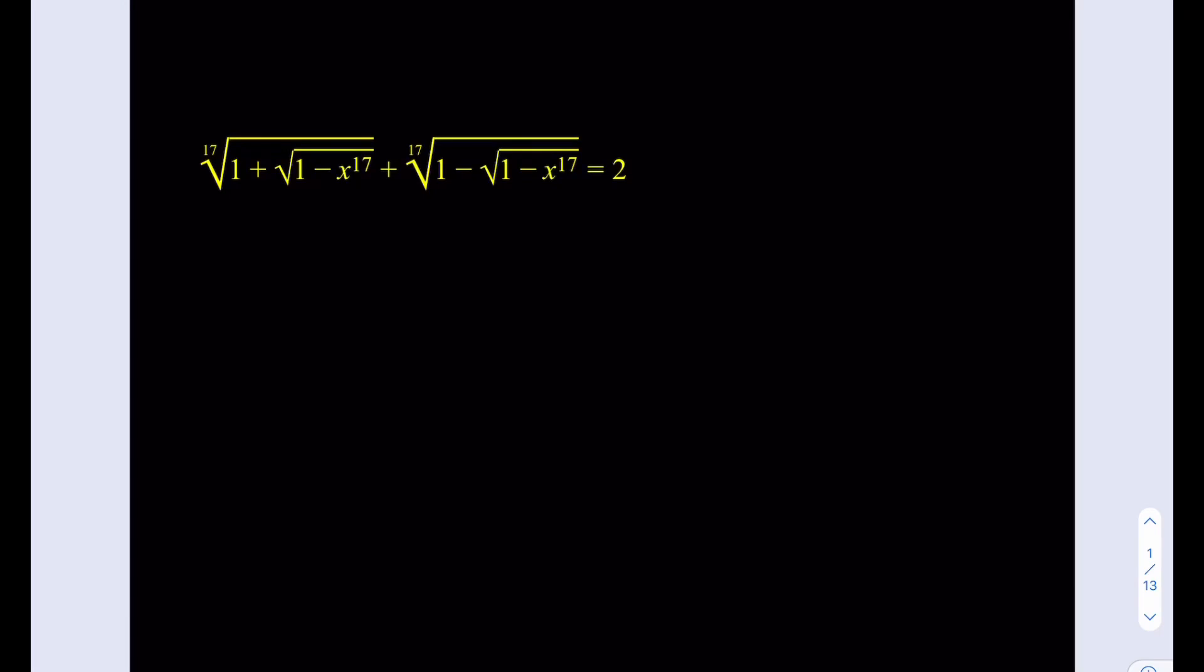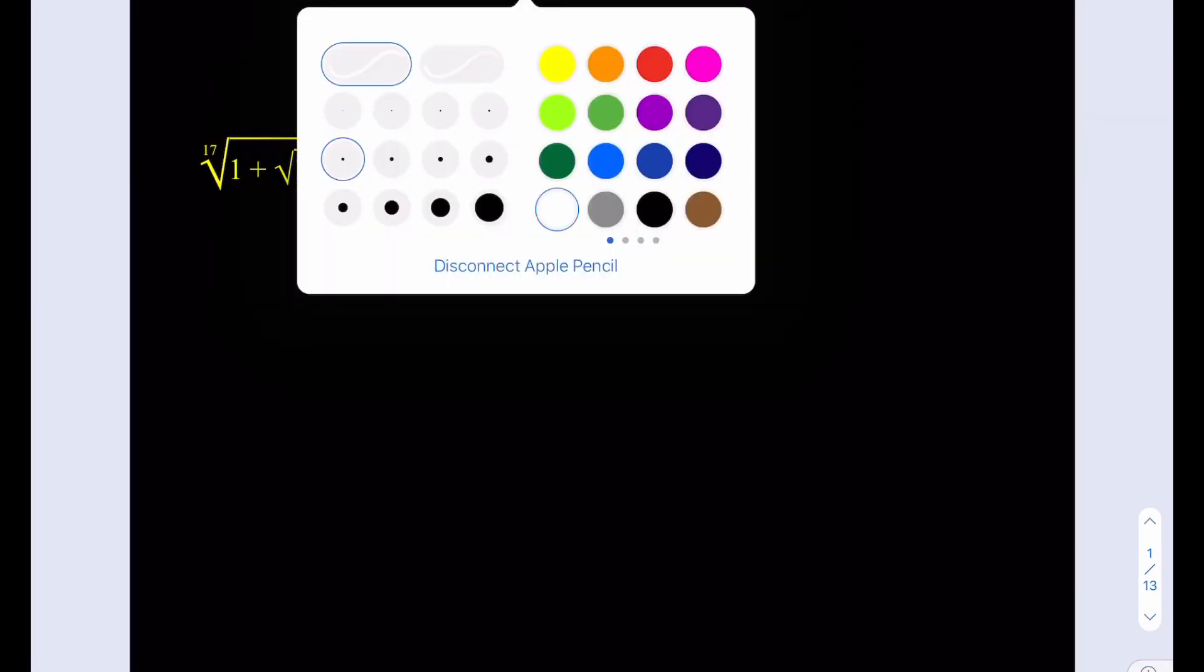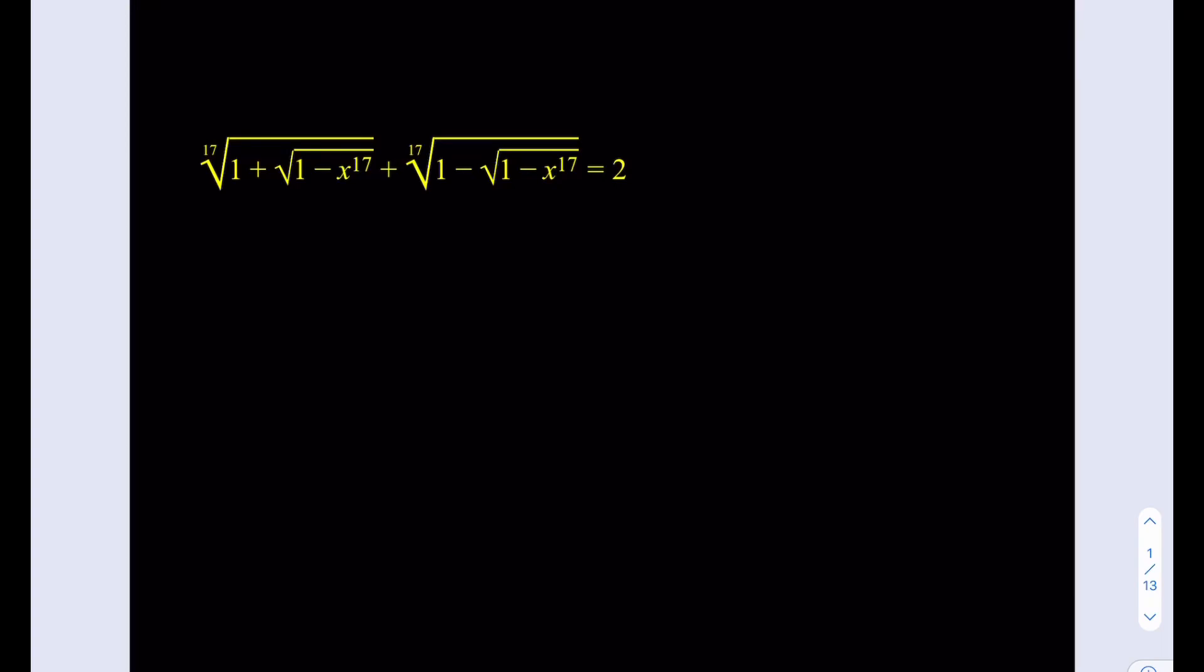Now, one of the approaches that we use, let's say if we had the cube root here, we would probably just cube both sides, right? Or we would use some substitution. Like you can call the first thing a, the second one b, so we get a plus b is equal to 2. So that's a possible approach. So we can just go ahead and get started with that.